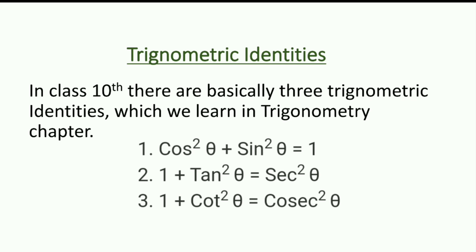In Class 10, there are basically three trigonometric identities in the trigonometry chapter. The first identity is sin²θ + cos²θ = 1. The second is 1 + tan²θ = sec²θ. The third is 1 + cot²θ = cosec²θ. We are going to discuss and prove all three of these identities.